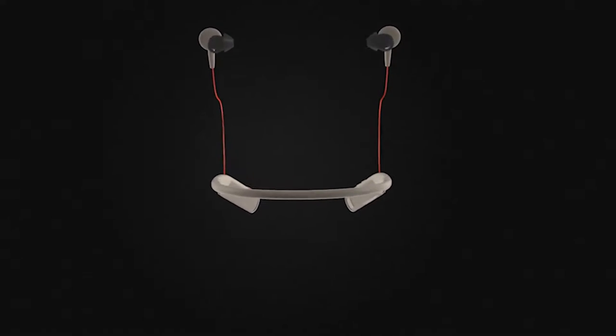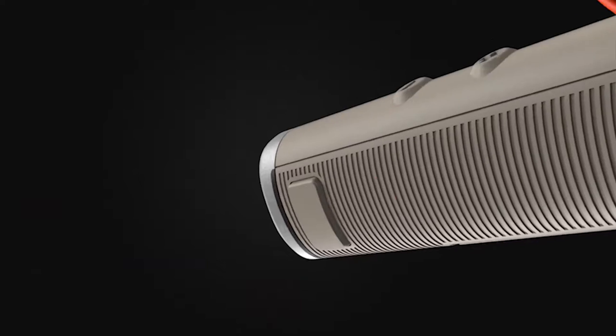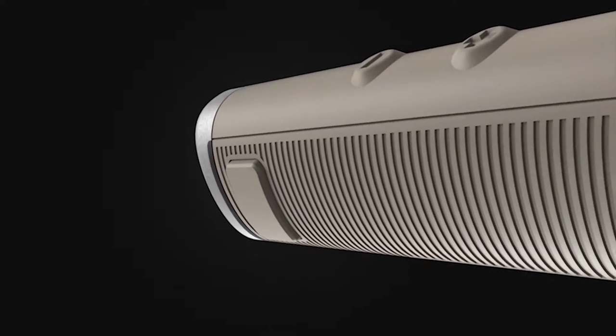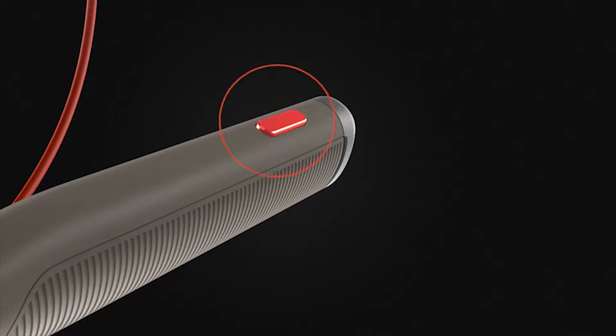If you are away from your devices, the neckband will vibrate when you have a call. To answer or end a call, tap the call button. Volume controls are on the top right side of the neckband. If you want to mute while on a call, tap the red mute button.